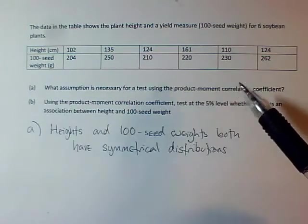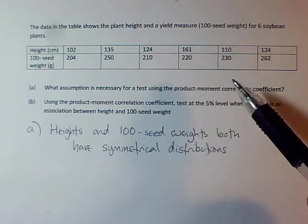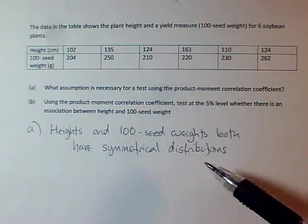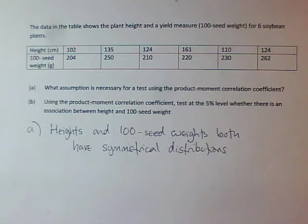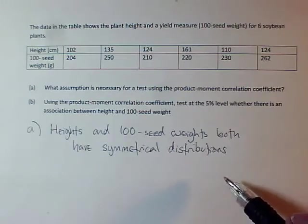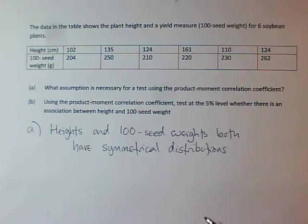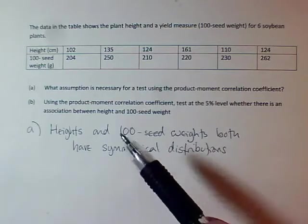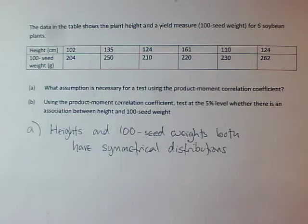We need to make the assumption that both heights and weights of plants have symmetrical distributions. In this case, we couldn't hope to conclude that from a scatter plot, there are only six points, but maybe we have other good reasons for assuming that the distributions are symmetrical. So assuming this assumption is correct, we're ready to go on and do part B, where we have to do the test.